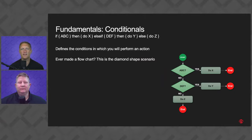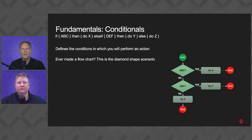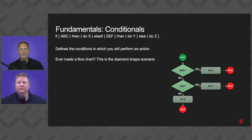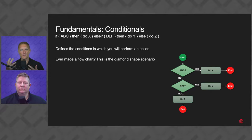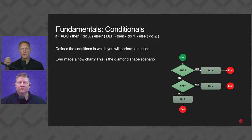Another fundamental is conditionals. If this condition exists or is true, then you do this; if it's false, you do something else — the typical flowchart. You'll see this a lot in iRules. There is the if/then/else structure: you can say 'if then' or just 'if' with 'else' as the fallback. The idea is that iRules act this way — if a certain condition is true, take this action, else take that action.